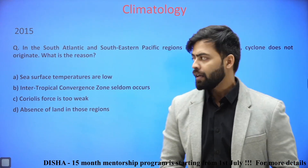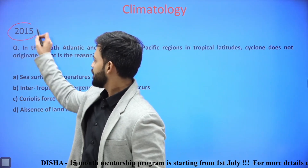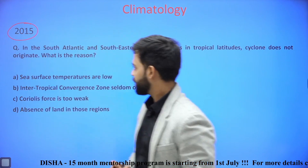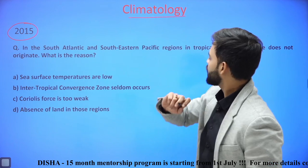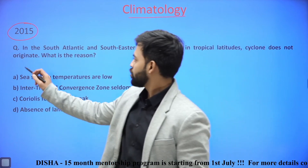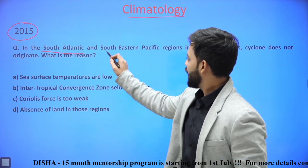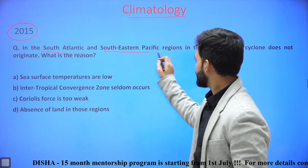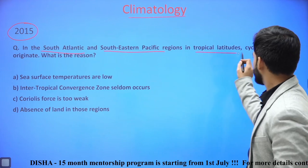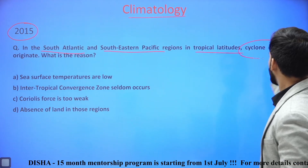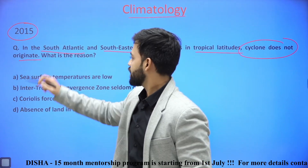Hello and welcome. Let's discuss this question that came in the year 2015 and is related to the topic of climatology. The question is: in the south Atlantic and southeastern Pacific regions in tropical latitudes, cyclones do not originate. What is the reason?